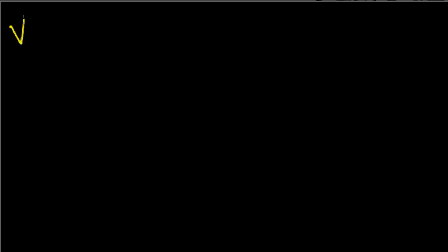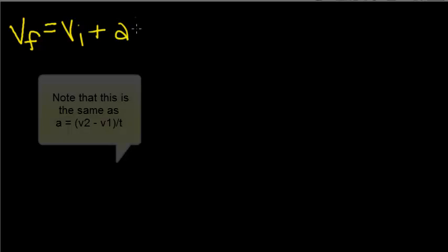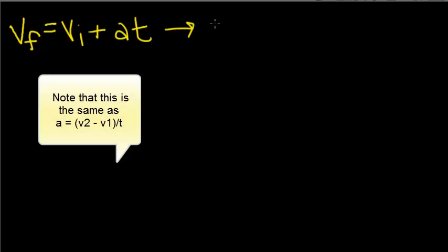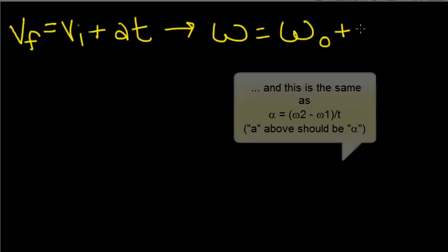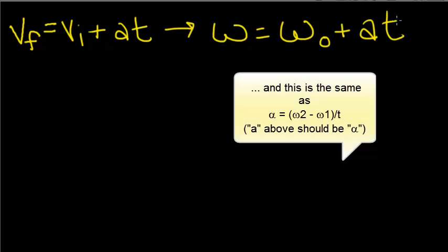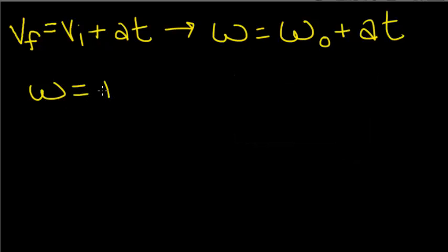So, we know that Vf is equal to Vi plus acceleration times time. We're going to change this to angular velocity is equal to initial angular velocity plus acceleration times time. Using this equation, we're going to find the new angular velocity and plug in the other numbers.